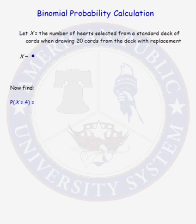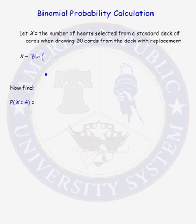Our random variable X has a binomial distribution. Why? Because we have a fixed number of trials — 20. We are calculating the number of successes, the number of times we get a heart. On each trial, each draw, there are two outcomes: we either get a heart or we do not. And the probability of success, the probability of drawing a heart, stays the same from trial to trial because each time we draw a card, we put it back into the deck and shuffle it.